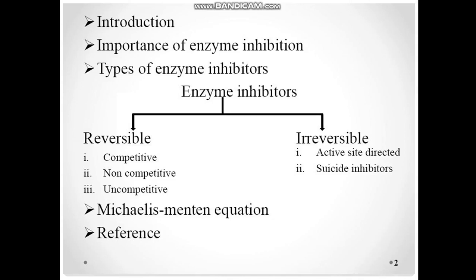In enzyme inhibitors we have mainly two types: one is reversible, another one is irreversible. For reversible we have competitive, non-competitive, and uncompetitive. In case of irreversible, we have the active site directed and suicide inhibitors. After that we are going to discuss the Michaelis-Menten equation and the references where I have collected the data.